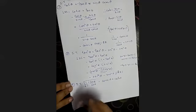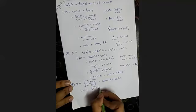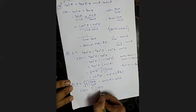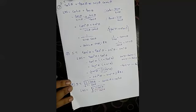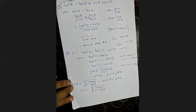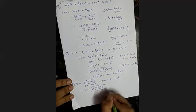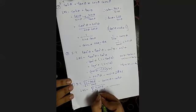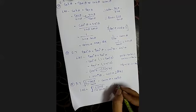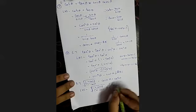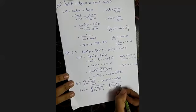So your LHS is root of 1 plus cos theta by 1 minus cos theta. Now, we have learned the rationalization method. What is the rationalization method? Multiply and divide with the denominator, just changing the sign. So I'm going to multiply and divide with root of 1 plus cos theta by 1 plus cos theta.